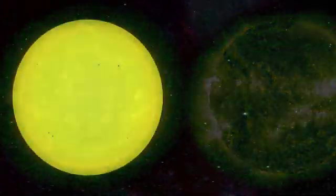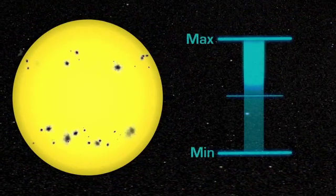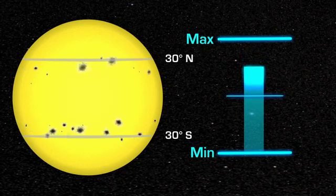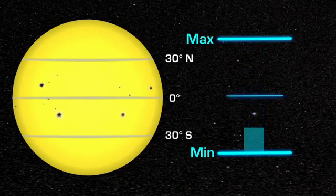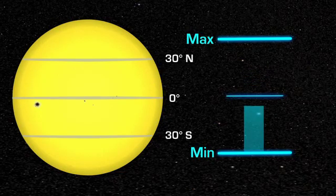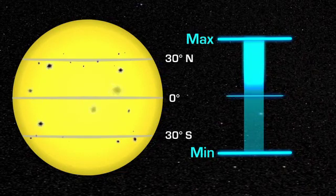During this cycle, the location of the sunspots also changes. They are at middle latitudes during solar maximum and move closer to the equator as the Sun approaches solar minimum. At solar minimum, there are sometimes no sunspots to observe. At solar maximum, there can be many at the same time.